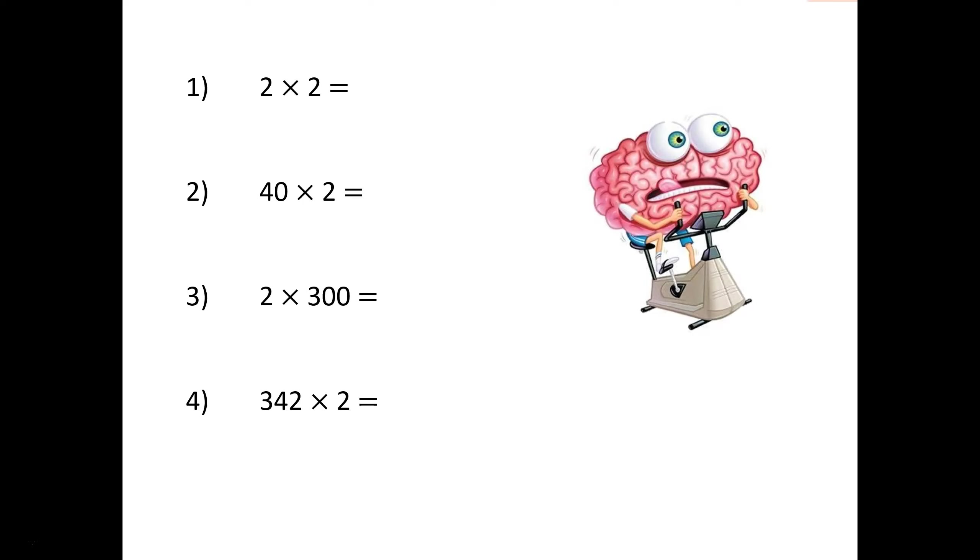How did you get on? Did you notice a connection between question 4 and the first 3 questions? In question 1, we are multiplying 1s. 2 ones times 2 is equal to 4 ones. In question 2, we are multiplying a multiple of 10 by 1 digit. 4 tens multiplied by 2 is equal to 8 tens, which of course is 80. In question 3, we are multiplying a multiple of 100. 3 hundreds times 2 is equal to 600.